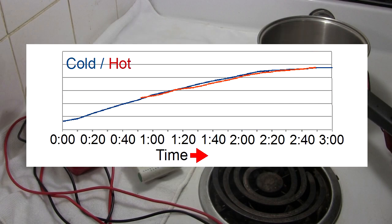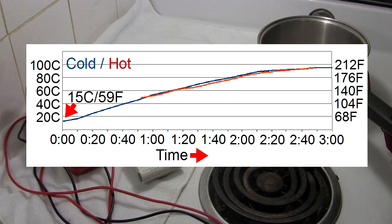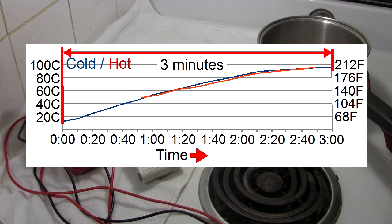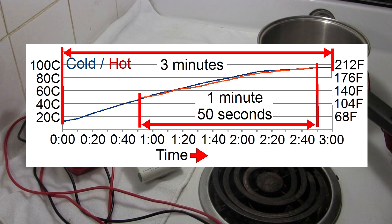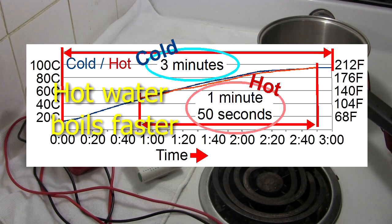Horizontally across the bottom we have time, and vertically on the sides is temperature. So the cold water started at 15 Celsius, or 59 Fahrenheit, and it ended at 96 Celsius, or 205 Fahrenheit, the hottest I measured before stopping. The cold water took 3 minutes to boil. The hot water took 1 minute and 50 seconds to boil. So the answer to the first question is that hot water does boil sooner than cold water, or faster as it's often stated.